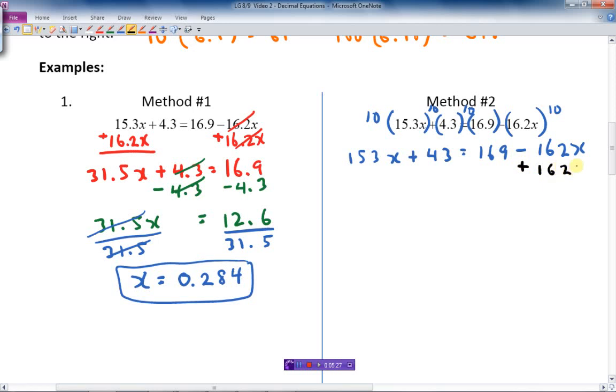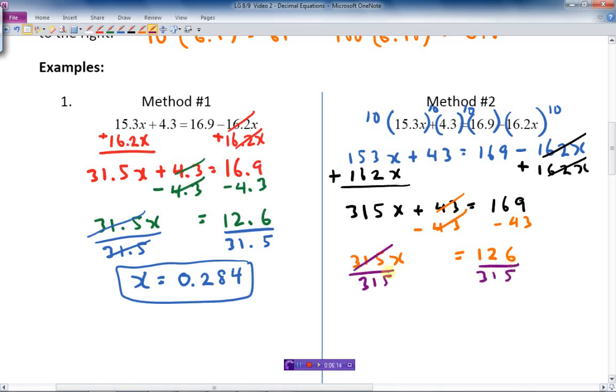We're going to plus instead of minusing, so it cancels out. We add those up and we have 315x plus 43 equals 169. Now we're going to minus 43 to get rid of that term there. And I've got 315x equals 126. Now last step here, I'm going to divide by 315. 315 is gone. I've got x equals.